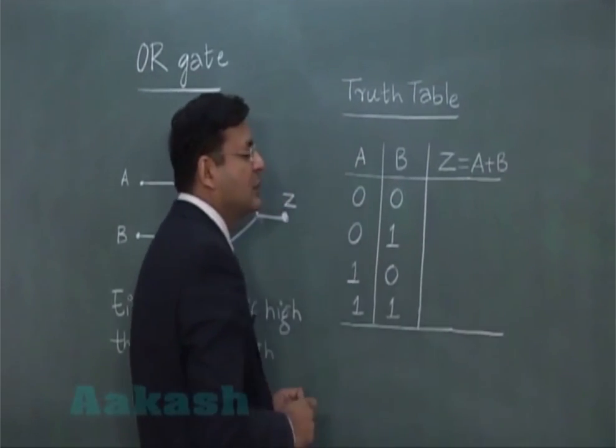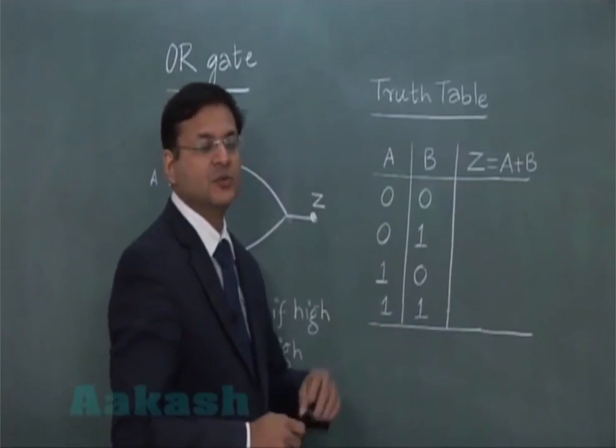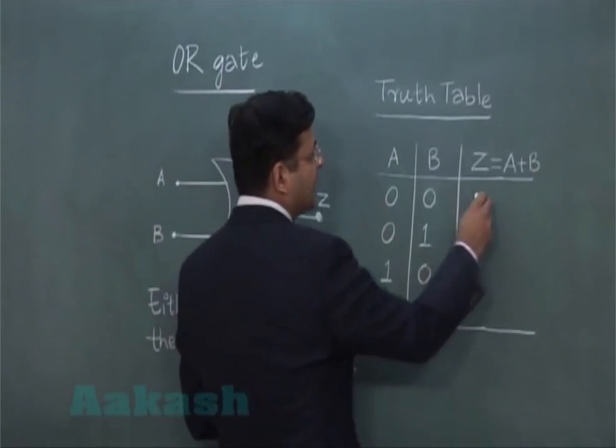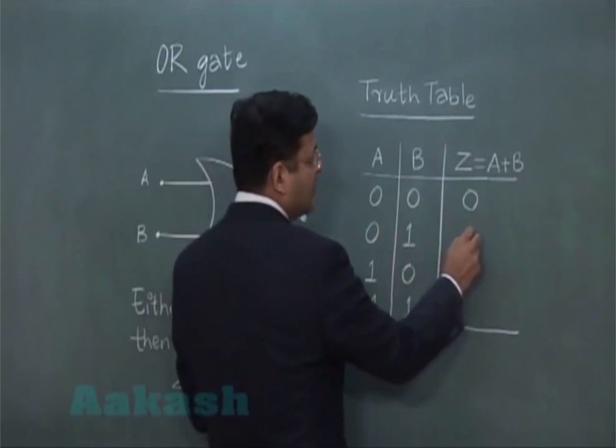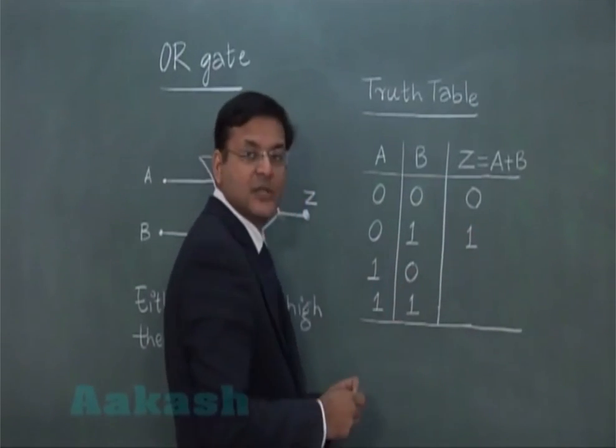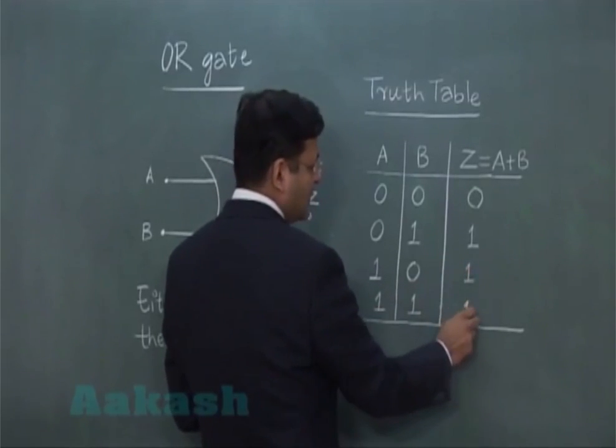Now if you see the logic here, if you are adding these two, then 0 and 0, if that is getting added, that is 0. If 0 plus 1 is there, it will be 1. If it is 1 plus 0, then also it is 1. And 1 plus 1 will also be 1.